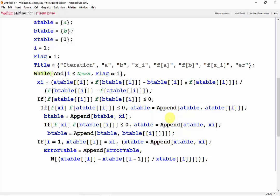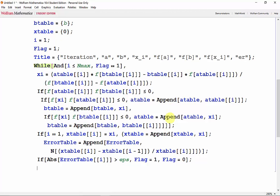Then we need to check the stopping error and change the value of the flag if we breached it. So if the absolute value of ErrorTable[i] is greater than the stopping error, keep flag equal to 1. Otherwise, change flag to 0, and finally increase i by 1.